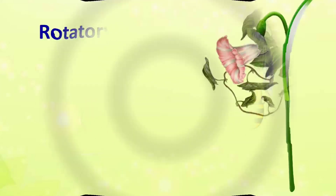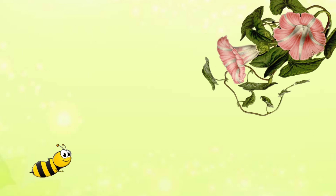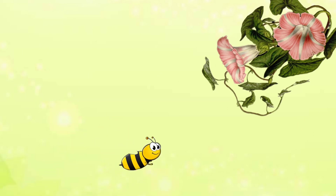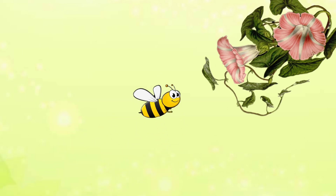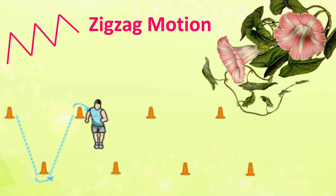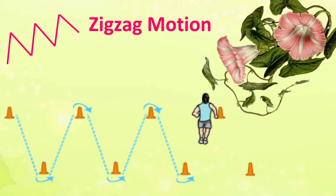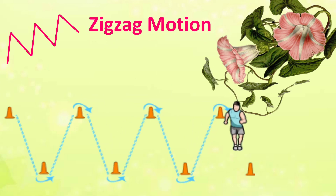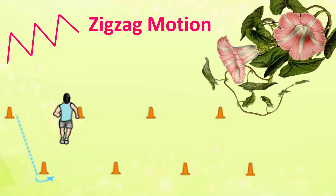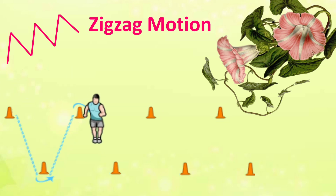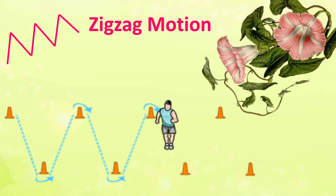How is the bee now moving to reach the flower? It's moving in a zig-zag manner. This is known as irregular motion or zig-zag motion. See how the athlete is running — it's running in an irregular motion.